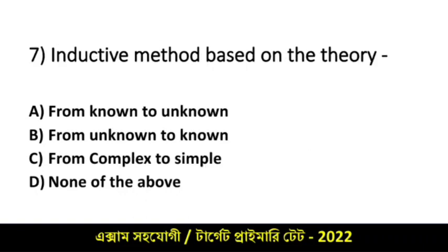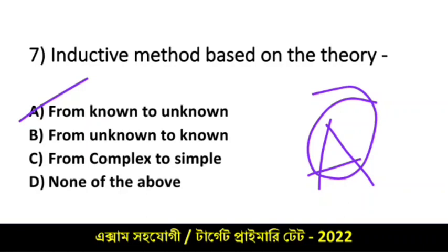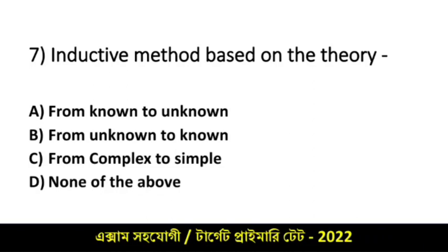The Inductive method is based on the theory of: from known to unknown, from unknown to known, from complex to simple, or none of the above. Option A — from known to unknown — is the right answer for the Inductive method.